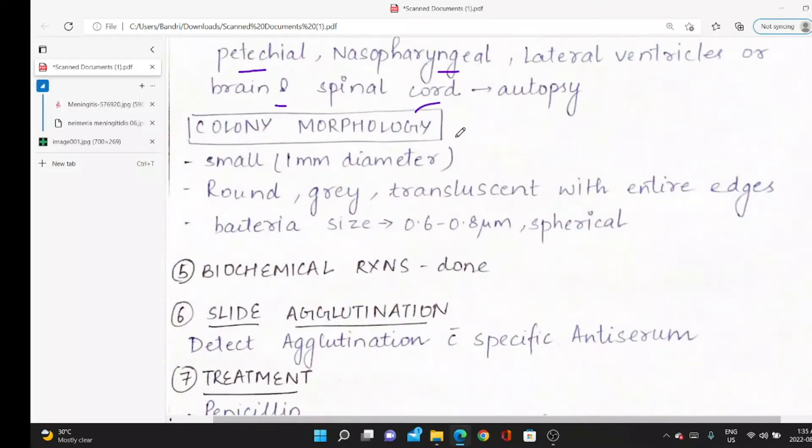Then colony morphology. After culturing on agar plate—whether blood agar or chocolate agar—we get small colonies.